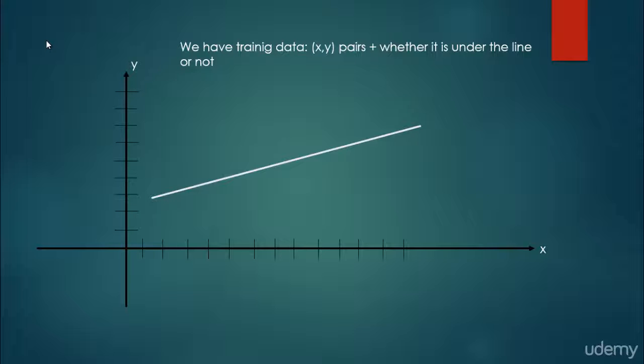The x represents the x value on the x-axis, the y is the value on the y-axis, plus the information whether it is under the line or not.